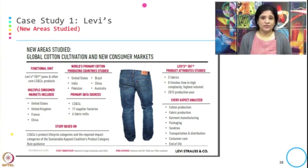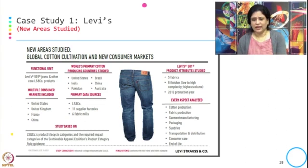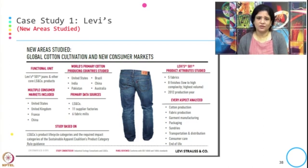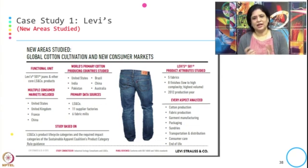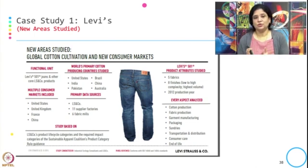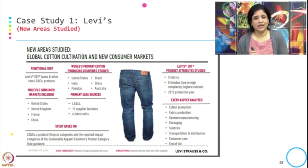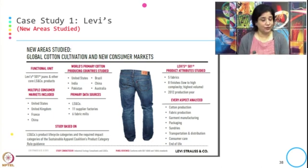The product attributes studied include 5 fabrics, 8 finishes ranging from low to high complexity, with 2012 as the production year. The aspects analyzed are cotton production, fabric production, garment manufacturing, packaging, sundry, transport distribution, consumer care, and end of life. This helps us see the goal and scope of their LCA and the different aspects covered, which then determines the LCA inventory.